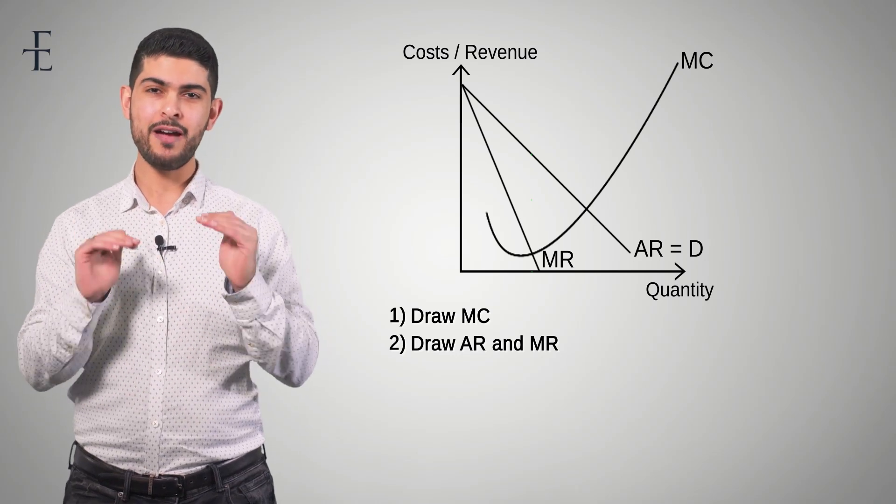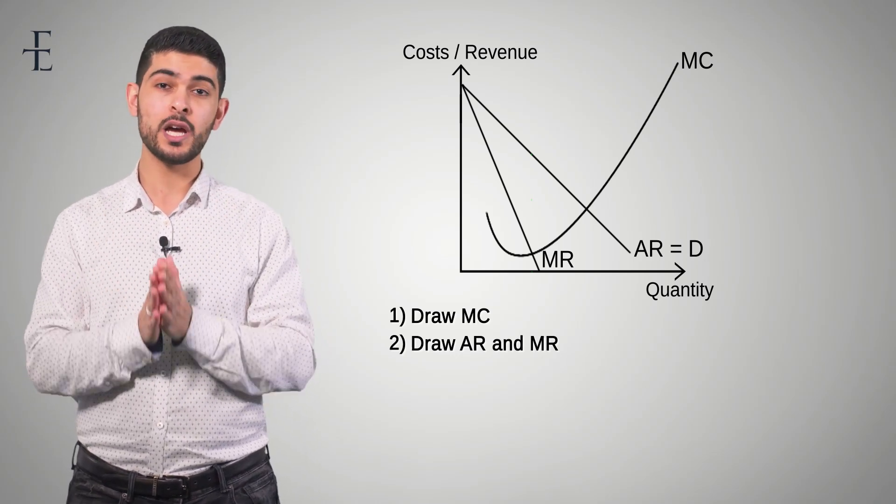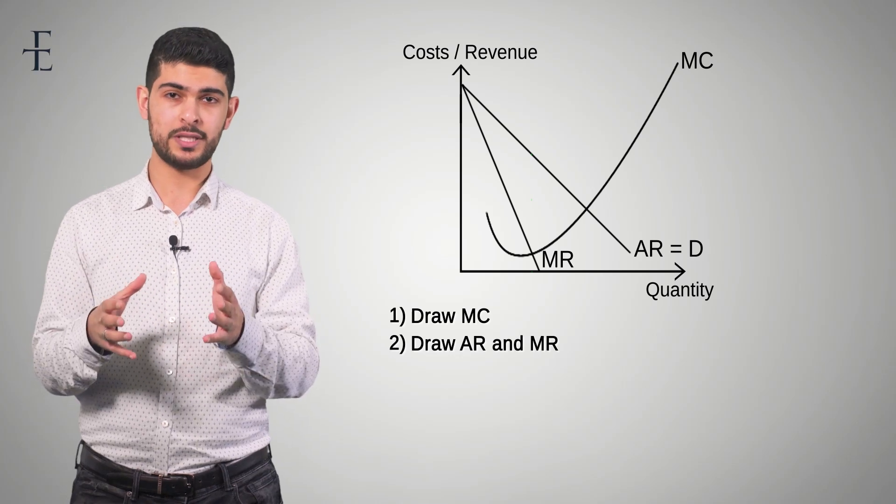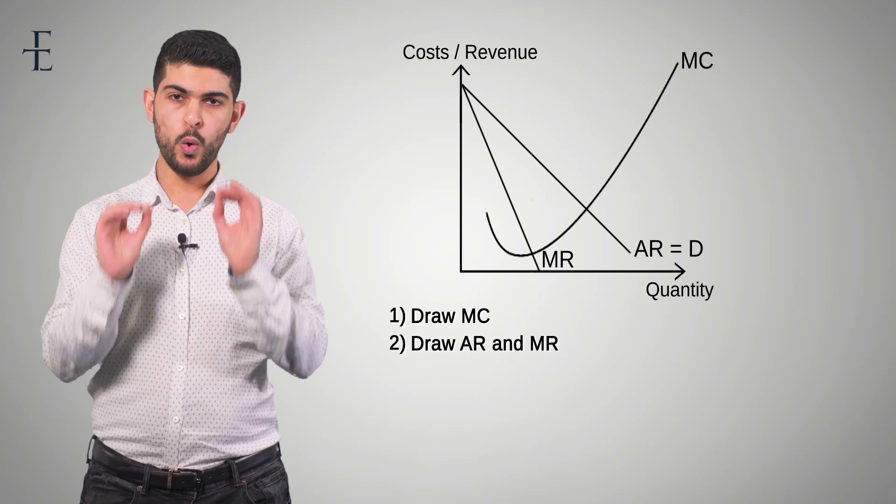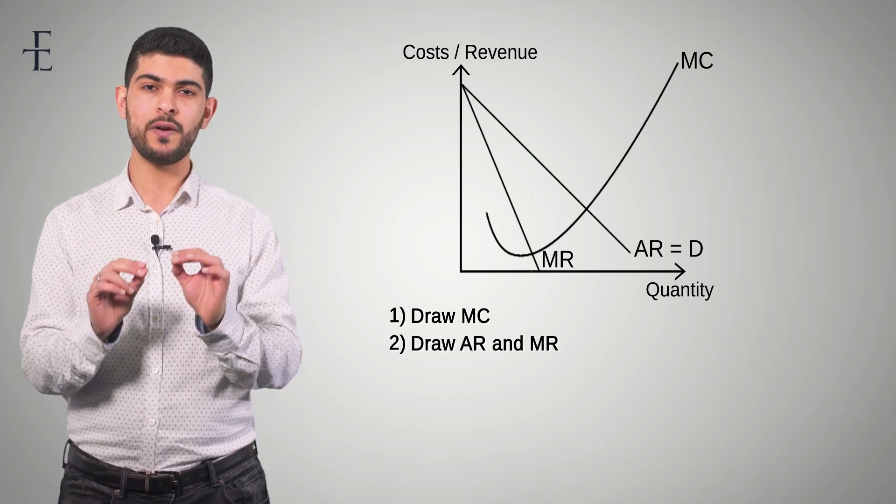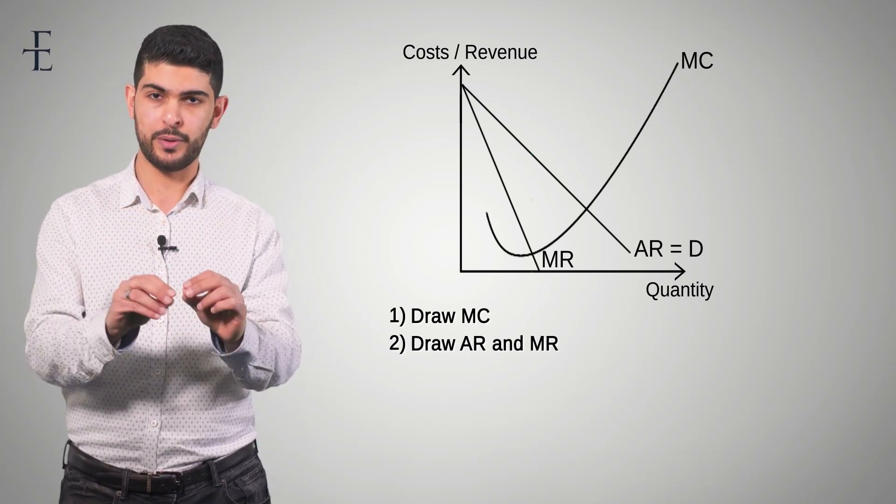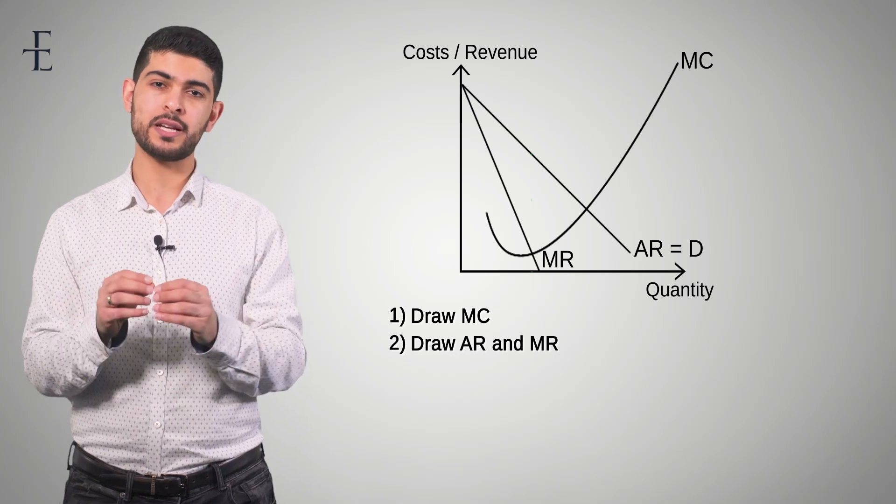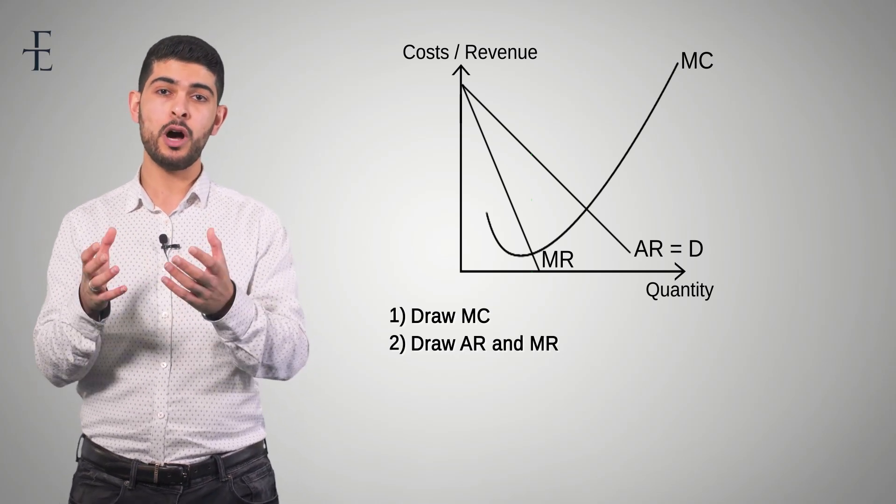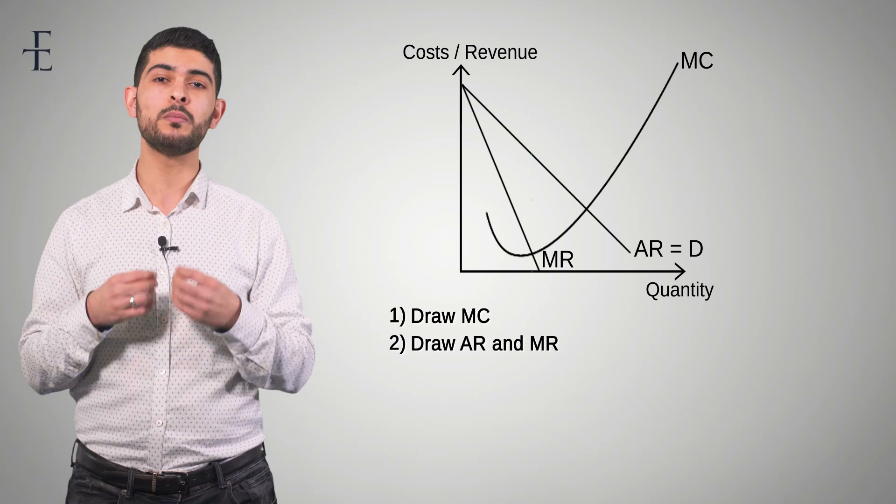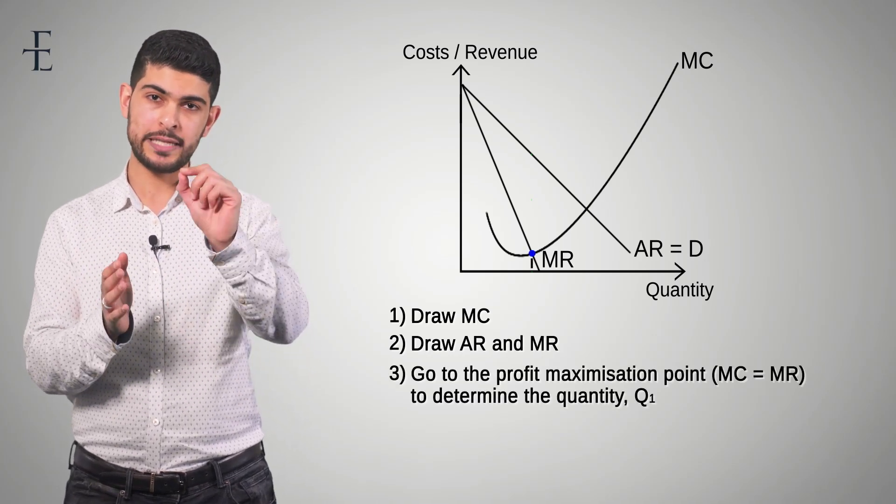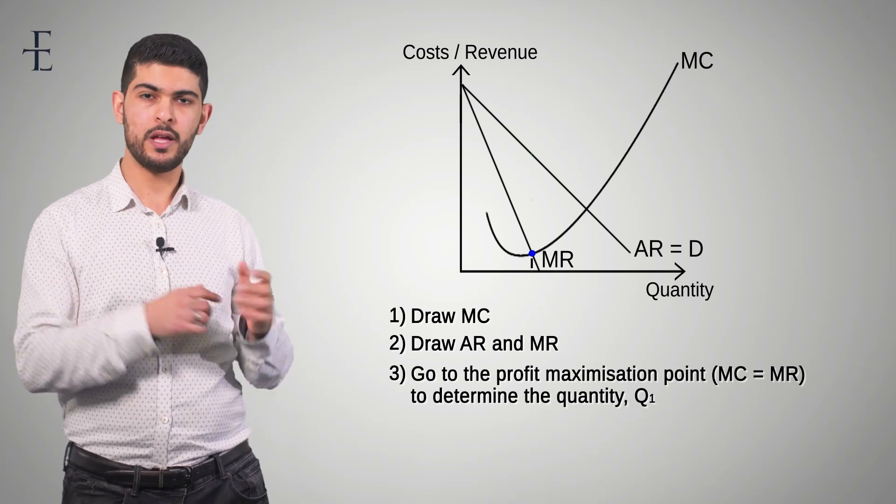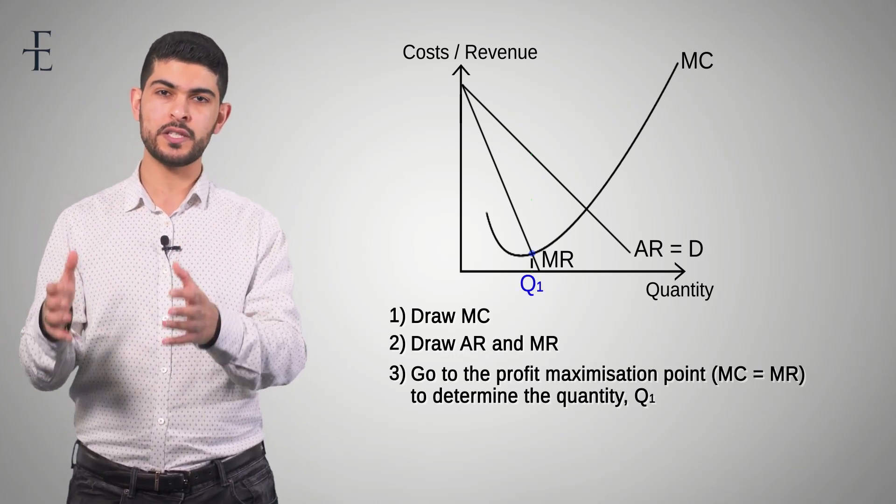It'll make a lot more sense later in the video, but hear me out. The next step always is to go to the profit maximizing level of output. Now you should know that the profit maximizing level of output is where marginal cost, MC, is equal to marginal revenue, MR. So what I'd like you to do is to dot down from that particular point. That is the quantity that this firm is producing.